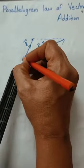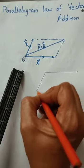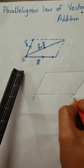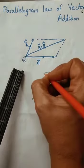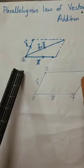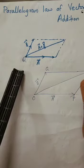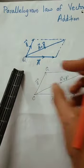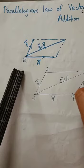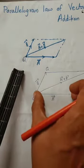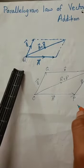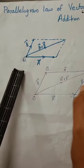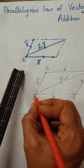We can name the parallelogram. The diagonal is A plus B. Q and R are the same length, so this side is also equal to B. O, P, Q, R — here OQ is vector A. This is OR. Let this be O, N, R.